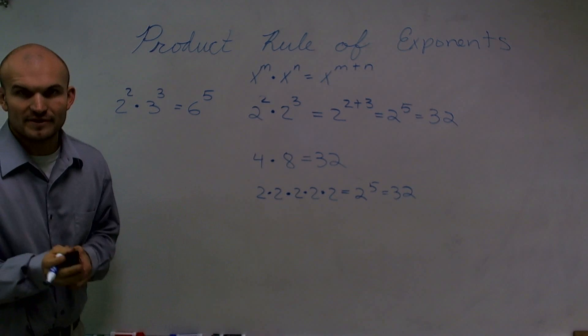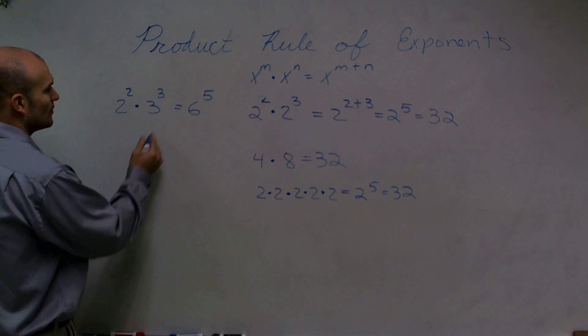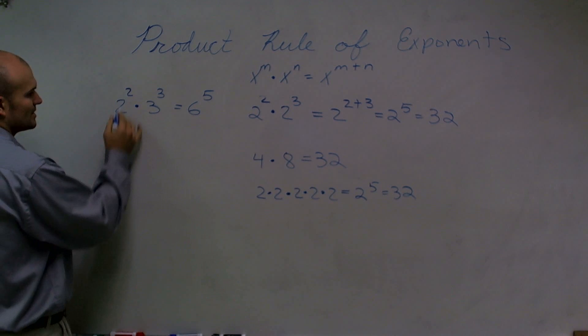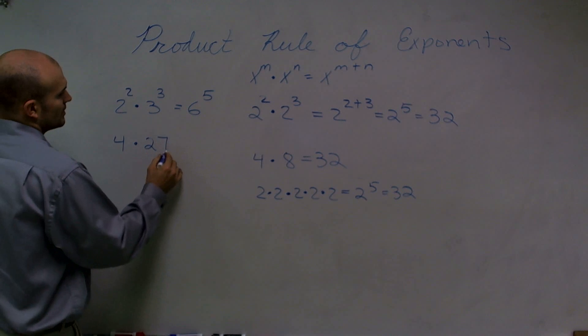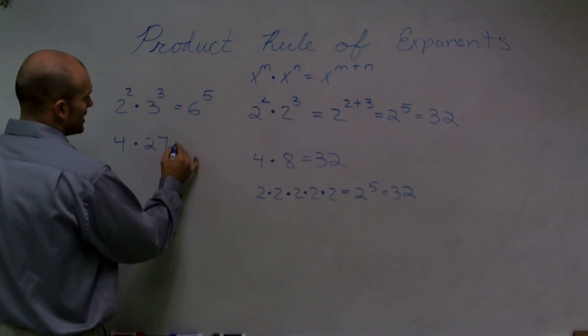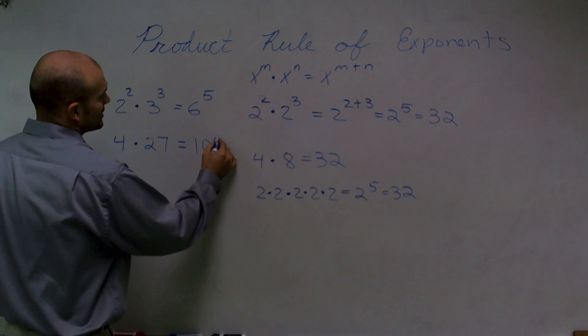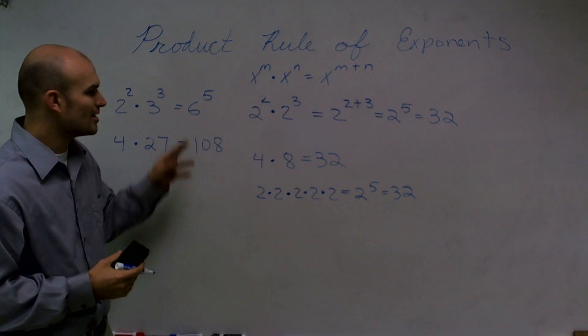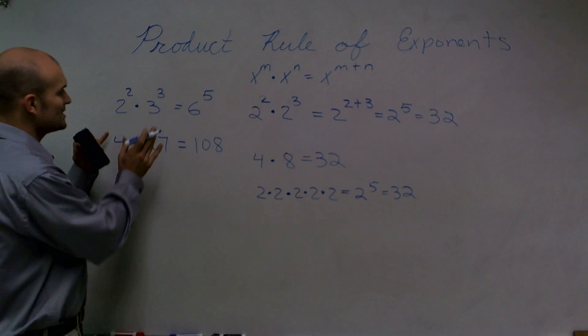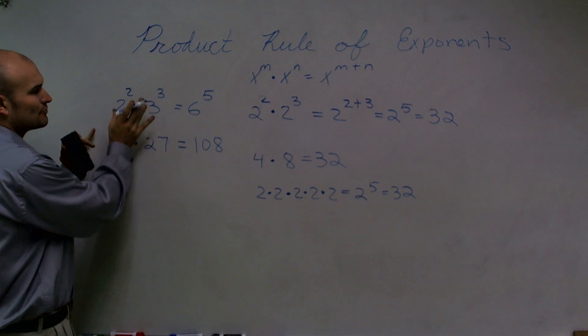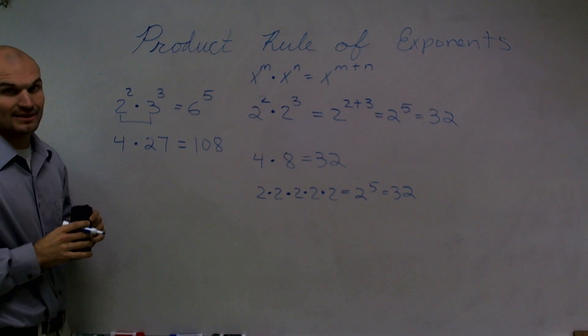Well, I don't know what 6 to the fifth power is off the top of my head. But obviously, let's look at what this is. 2 squared is going to be 4 times 3 cubed is 27. Now, 4 times 27 is going to be 108. And I don't know what 6 to the fifth power is, but it's definitely not 108. So make sure that you cannot, the rules of our exponents do not work if your two bases are not the same.